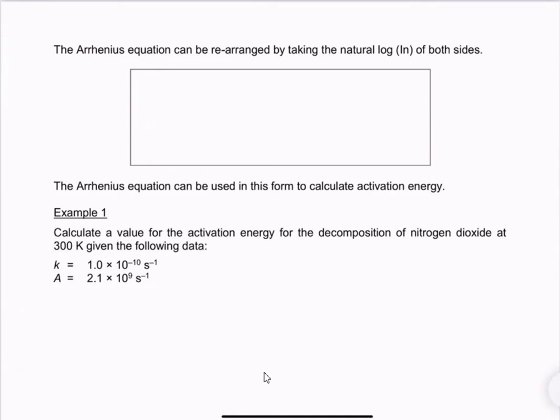Sometimes when you're using the Arrhenius equation, they may give you a rearranged form that allows you to use it for different purposes more readily. The rearranged form can be found by taking natural logs of both sides. Now, you will be given this, you're not expected to be able to do this yourself, but if you are taking A-level maths, you should be able to do this yourself.